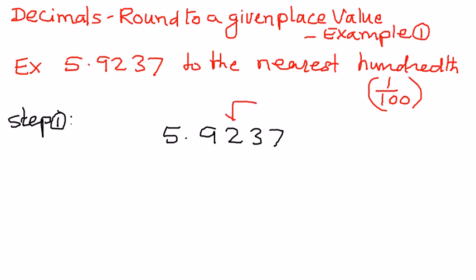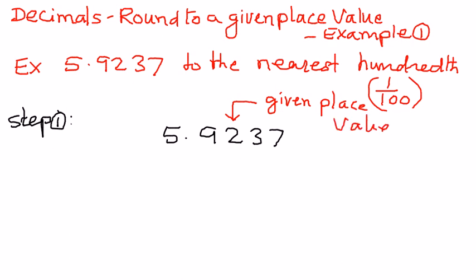The digit just to the right of the decimal point is the tenths place, and then the number next to that is the hundredths place. So the digit 2 is located at the hundredths place — that is what we call the given place value.